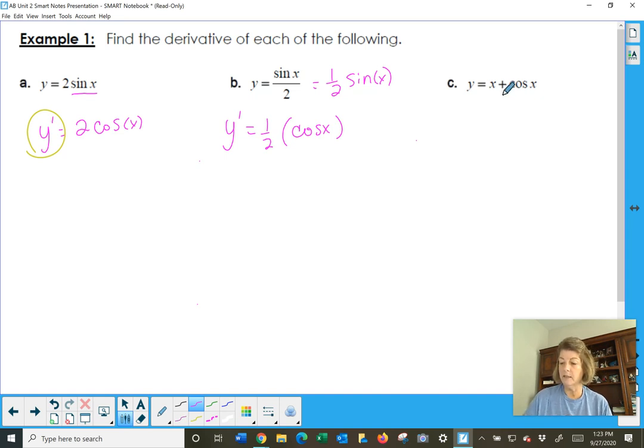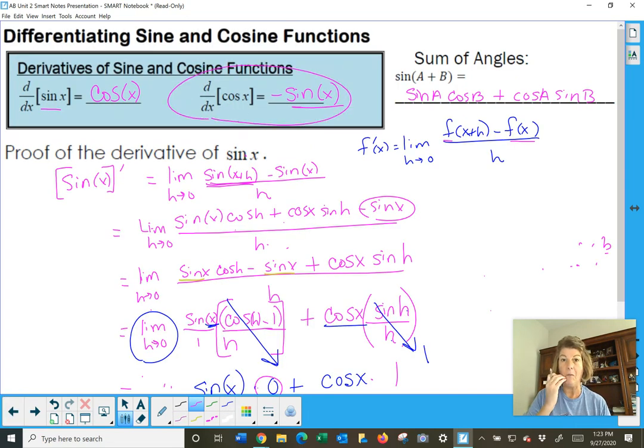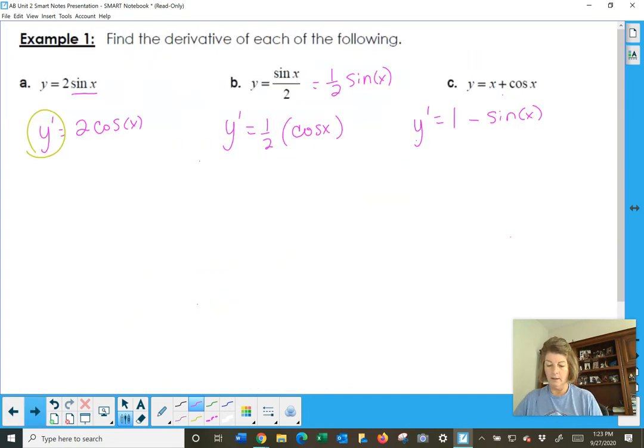The next one, the sum of two terms, we just do each one individually. So the derivative of x is 1, and the derivative of cosine is negative sine x. If you don't remember it, look back at the top of your notes, and you have it.